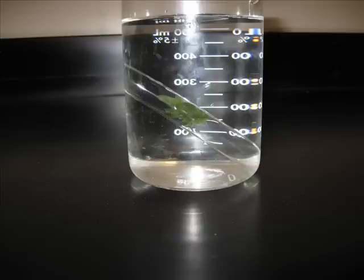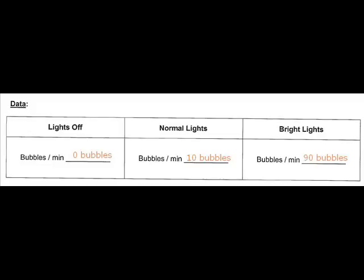Next we turned the normal room lights on and again timed this for the same amount of time as the first test. We found that with the normal room lights on, your plant made ten bubbles of oxygen come out of its stem. Please record this in your data table for normal lights — ten bubbles.